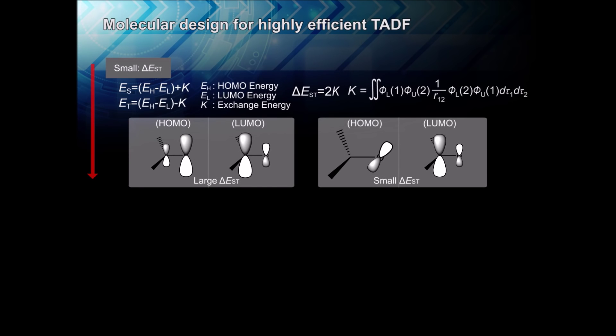The key requirements for TADF are first, a small delta EST to promote the conversion of triplets to singlets, and second, efficient emission from the singlets.